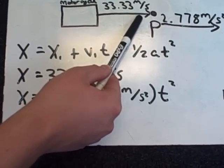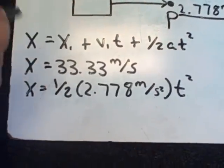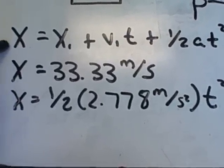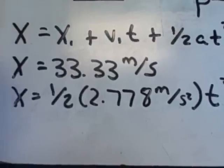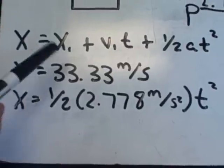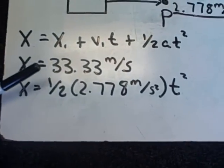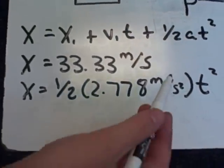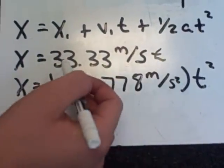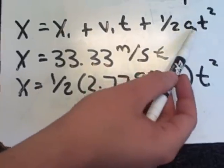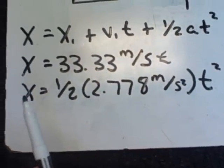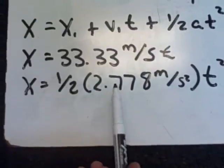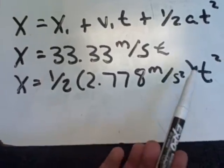In order to find the time, you use the distance formula: X equals X-initial plus V-initial times T plus one-half A T squared. For the motorcycle, the distance formula is 33.33 meters per second times T, because that's the initial velocity multiplied by T, and the acceleration is zero so that part cancels out. For the police officer, there is no initial velocity — that's zero — so you just use one-half times the acceleration of 2.778 meters per second squared times T squared.